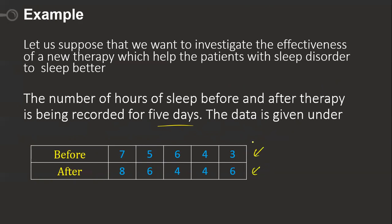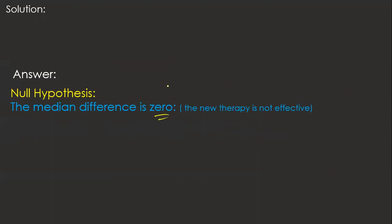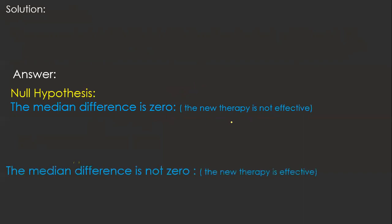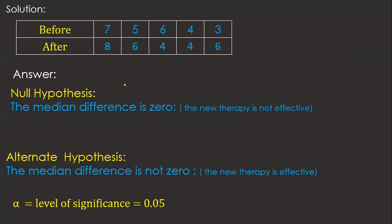First, frame the hypotheses. Null hypothesis H0: the median difference is zero, i.e., median one equals median two — the new therapy is not effective. Alternate hypothesis H1: the median difference is not zero — the new therapy is effective. The level of significance alpha is set to 0.05, i.e., 5%.